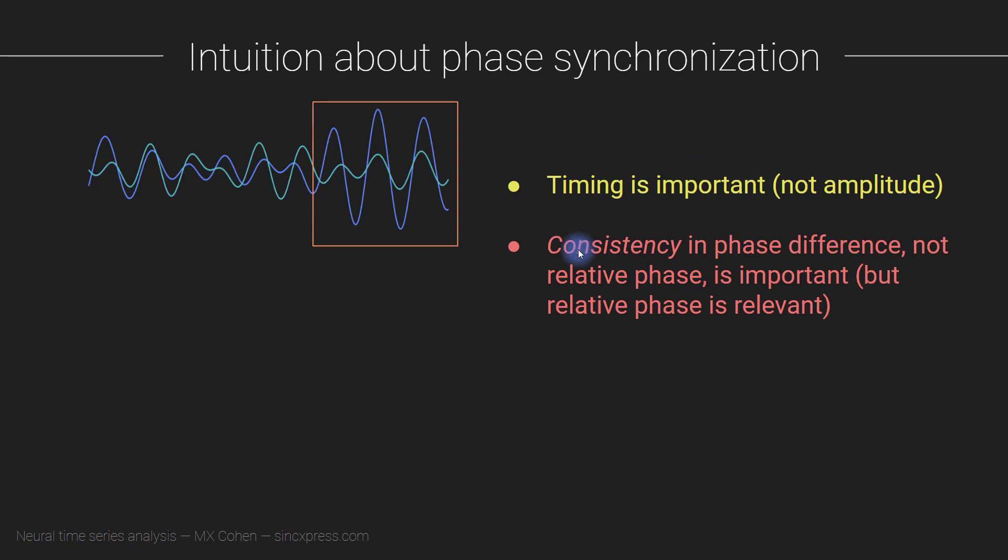Okay, so timing is important, not amplitude. Another key point is that we are interested in the consistency of the phase difference, the phase differences between two different electrodes through time series, and not the actual phase itself. So for example, here you see phase synchronization. And in this time window, you also see strong phase synchronization. Now this is anti-phase synchronization. They are going, one goes up and the other one goes down. So they're anti-correlated. That can be important, that can be relevant. Relative phase is interesting to interpret.